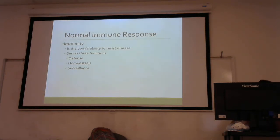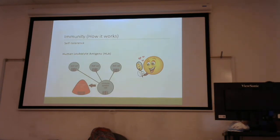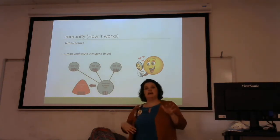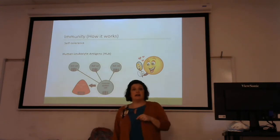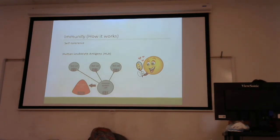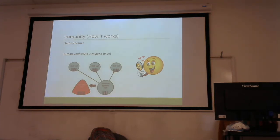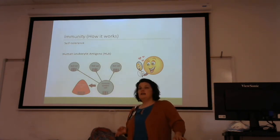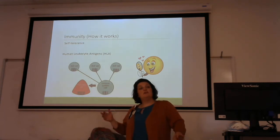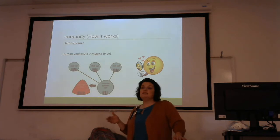Your immune system recognizes you through a protein on all your cells that contains a very specific marker called your HLA type — human leukocyte antigen. All body cells are surrounded by the plasma membrane containing the HLA, which is inherited from your parents and determines your tissue type. Think of it as your universal barcode — you are unique, unless you have an identical twin who shares the same HLA type.